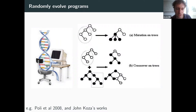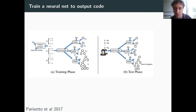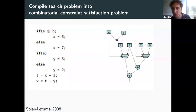There are lots of other ways people have tried to synthesize programs. The genetic programming literature, pioneered by John Koza and others, tries to randomly evolve programs by treating syntax trees as things that can be mutated and crossed over. People have also looked at training neural nets to synthesize programs — a network that looks at a specification and outputs source code, like a language model. In the programming language community, the Sketch system compiles program synthesis problems into a constraint satisfaction language and then solves it using SAT.